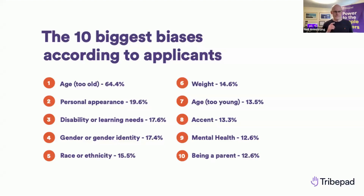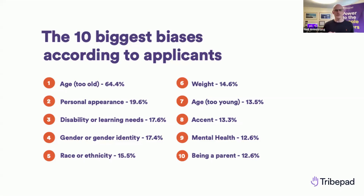So the results are: age is by far and away — smart panel today, you were right. Age by far is the bias that most people are worried about in the recruitment process. Personal appearance is interestingly second. Disability comes in third with about 18%. Then we're looking at gender or gender identity at a similar proportion of about 8%. Interestingly, race and ethnicity was smaller, down at around 15–16%. There are also concerns around weight, being too young, accents, how open to be about mental health, and being a parent — so there are other considerations beyond just the standard age, gender, disability, and ethnicity.